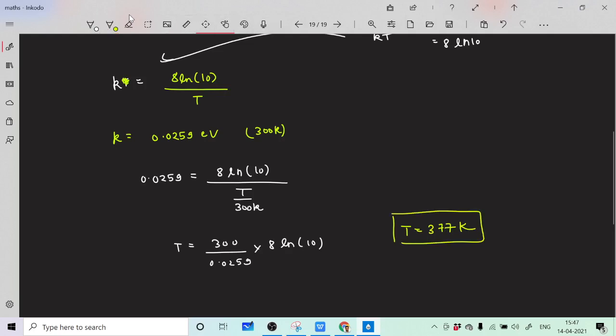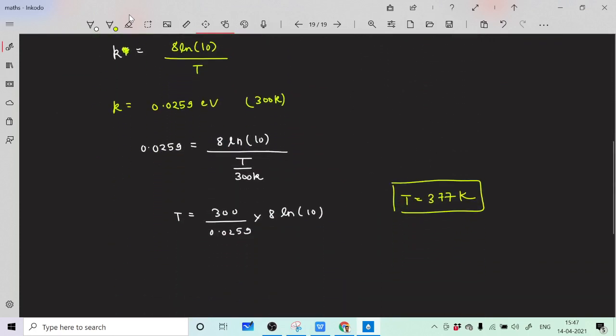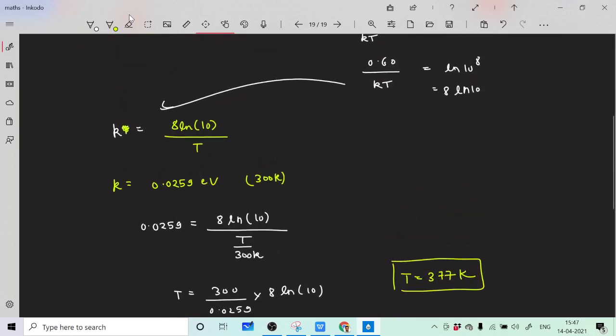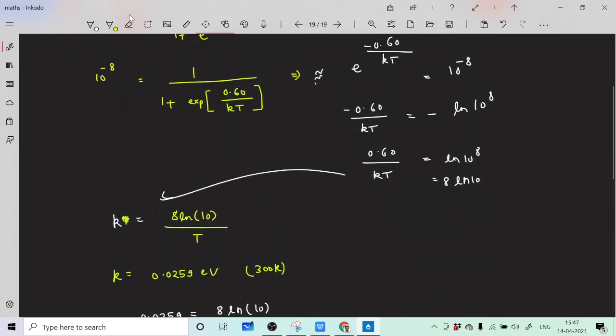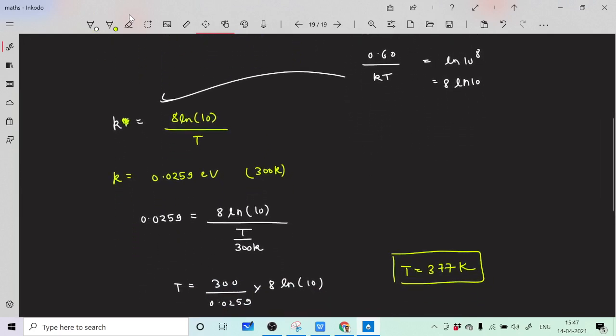If you go to part b, you have to just replace 10 to the minus 8 by 10 to the minus 6 and everything is same. What will change? You will get 6 ln 10 instead of 8, so instead of 8 you will have 6 here and everything is same.